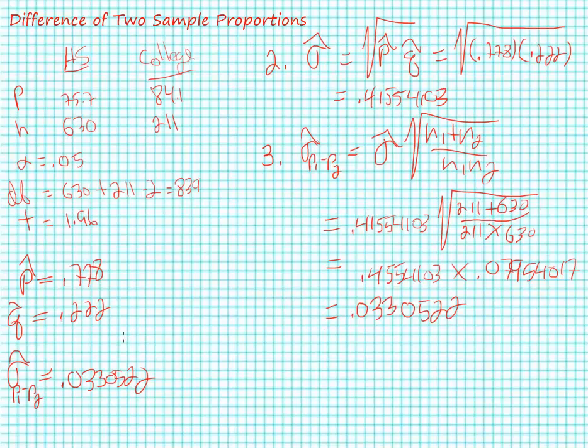So the purposes of steps one and two are to provide the numbers so that in step three we can calculate the standard error. The last step is to go ahead and calculate our statistic for the difference of the two means.